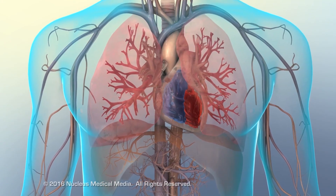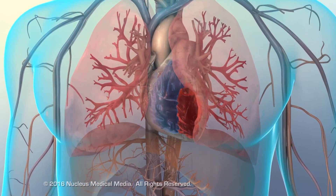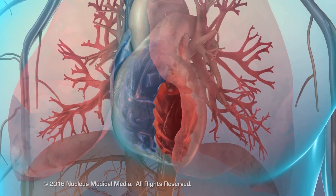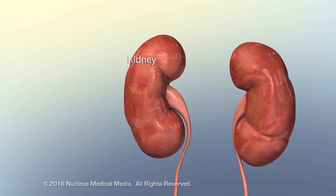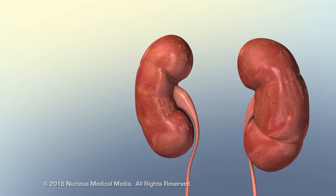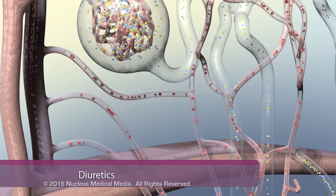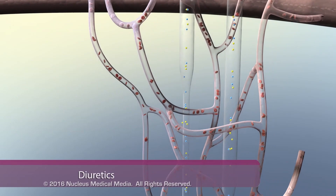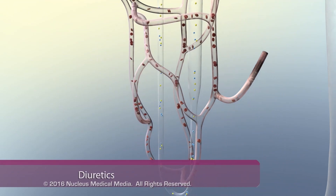Treatment for heart failure involves changes in lifestyle such as diet and exercise, medication, surgery, or a combination of approaches. Diuretics are commonly prescribed; they reduce fluid volume and venous return by inhibiting sodium and water reabsorption along the kidney's renal tubular system.